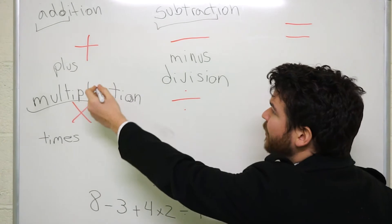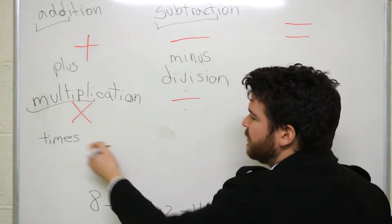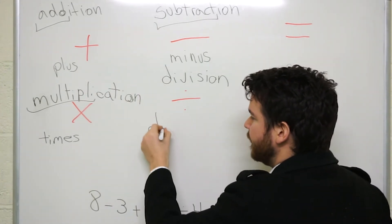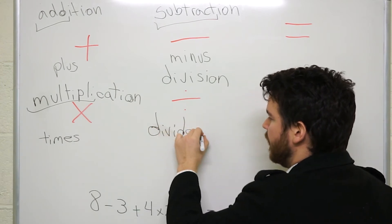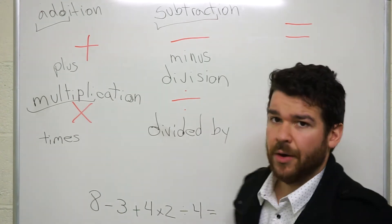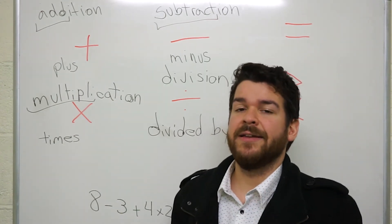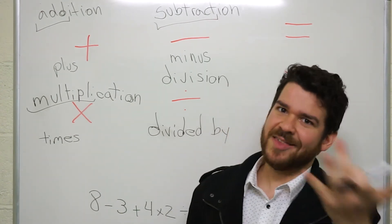You just say, instead of saying plus something, minus something, times something, you say divided, divided by. So 49 divided by seven is seven.